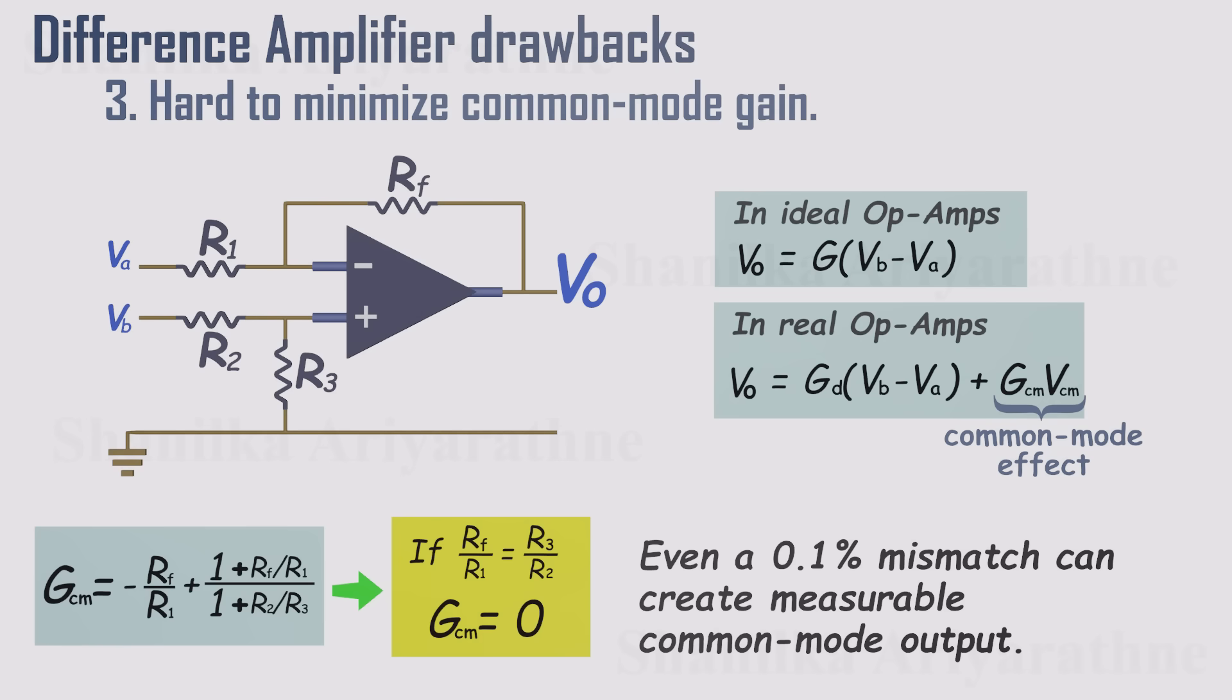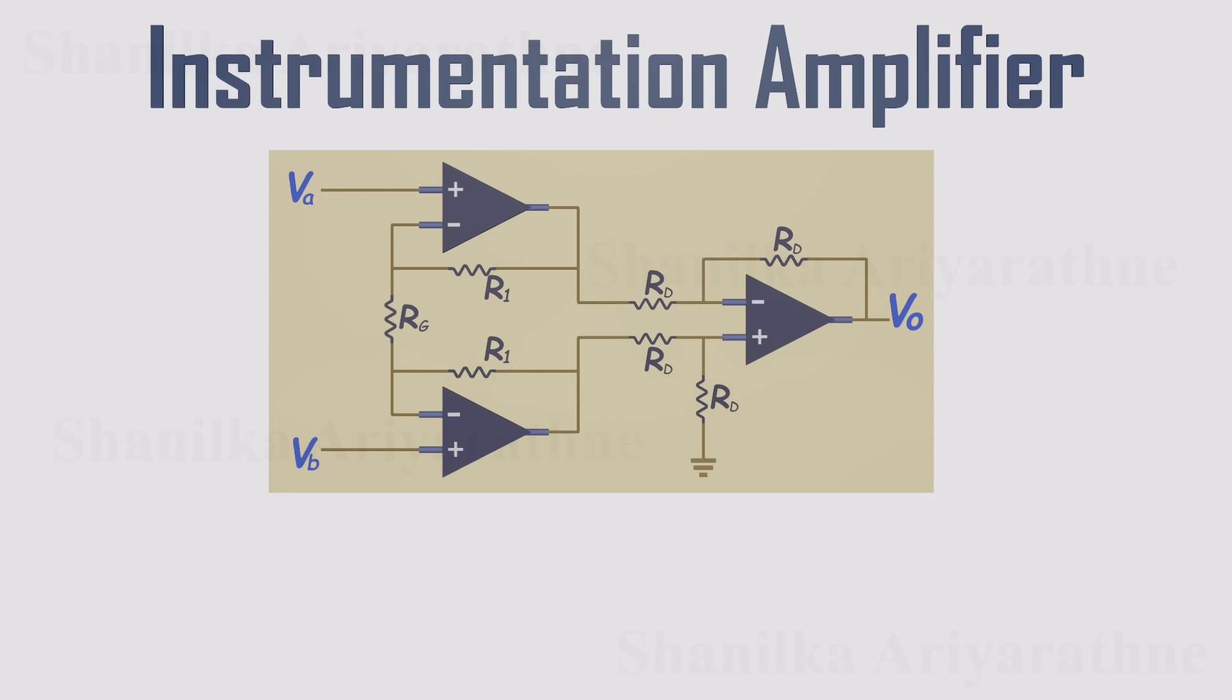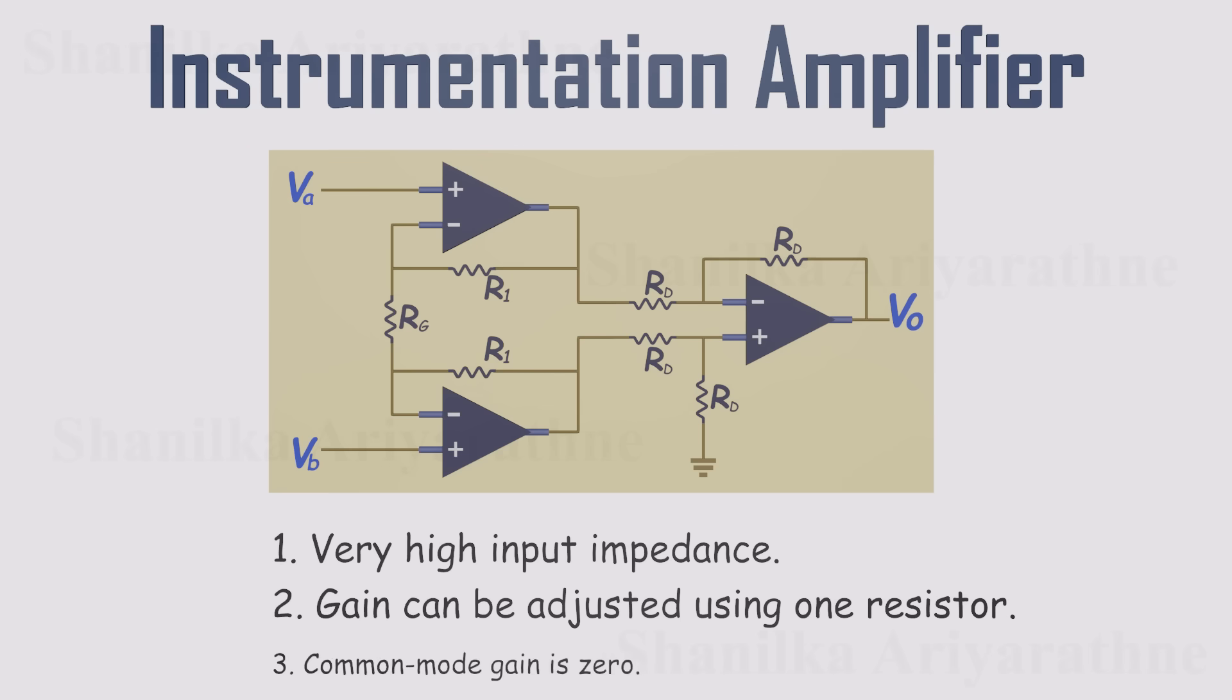To overcome these drawbacks, engineers use an improved version of the op-amp circuit, the instrumentation amplifier. It neatly fixes all the issues we just talked about. It offers extremely high input impedance, the gain can be set with just a single resistor, and ideally the common mode gain drops to zero.